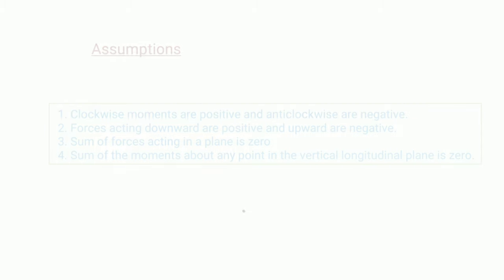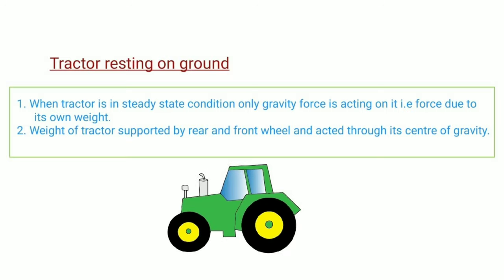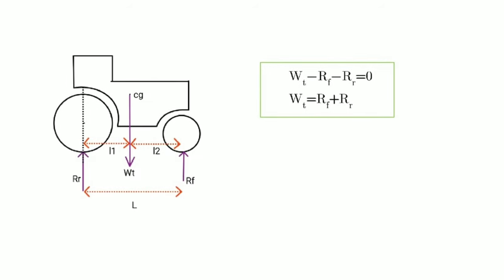Now let's consider first case: Tractor resting on the ground. When tractor is in steady state condition, only gravity force is acting on it due to its own weight. Weight of tractor is supported by rear and front wheels and acts through its center of gravity. Generally CG of Tractor is located near the rear axle. Due to weight of Tractor, reactions are produced at front and rear wheels. They are equal and opposite to the weight of Tractor. RF is the reaction at front wheels, RR is the reaction at rear wheels.